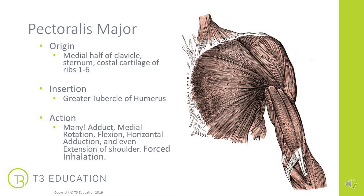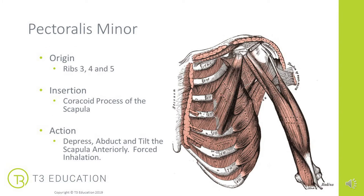Pectoralis major is also involved in forced inhalation, so breathing patterns are really important when looking at the pectorals. Pec minor — the smaller pec muscle underneath pectoralis major — originates on ribs three, four, and five, and inserts onto the coracoid process of the scapula. Its actions include depression, abduction, and anterior tilting of the scapula, and it is also involved in forced inhalation.